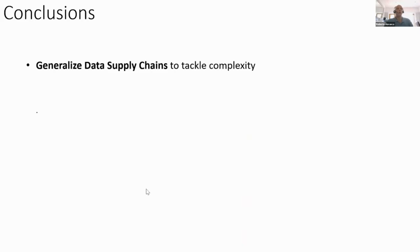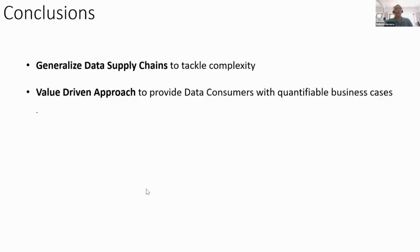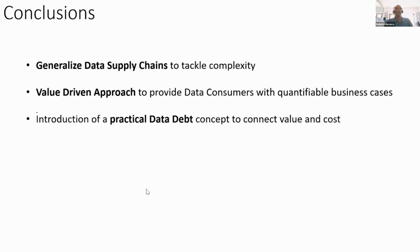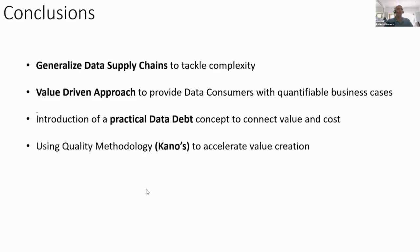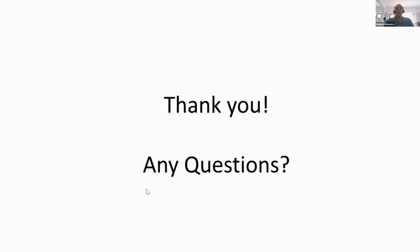So in conclusion: we generalize the supply chains to tackle the complexity tipping point. We want a value-driven approach to provide the consumer with quantifiable business cases — giving them a language to substantiate what the exercise will bring to the company and at what cost. We introduce data debt as a concept connecting value and cost, and using the Kano quality methodology, we accelerate value creation by focusing on what the consumer considers most important to resolve first.